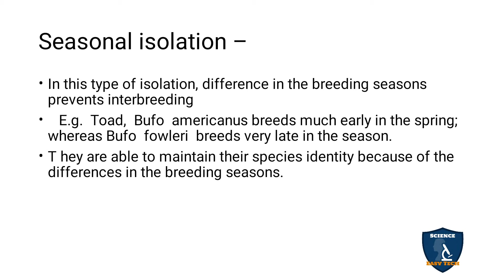Buffo fowleria breeds very late in the spring season — near the end of spring. Both are toad species only. The common name for both is toad. Buffo americanus breeds early in spring, while Buffo fowleria breeds very late in spring. Based on this difference in the breeding season, isolation takes place and they are able to maintain their respective species identities.